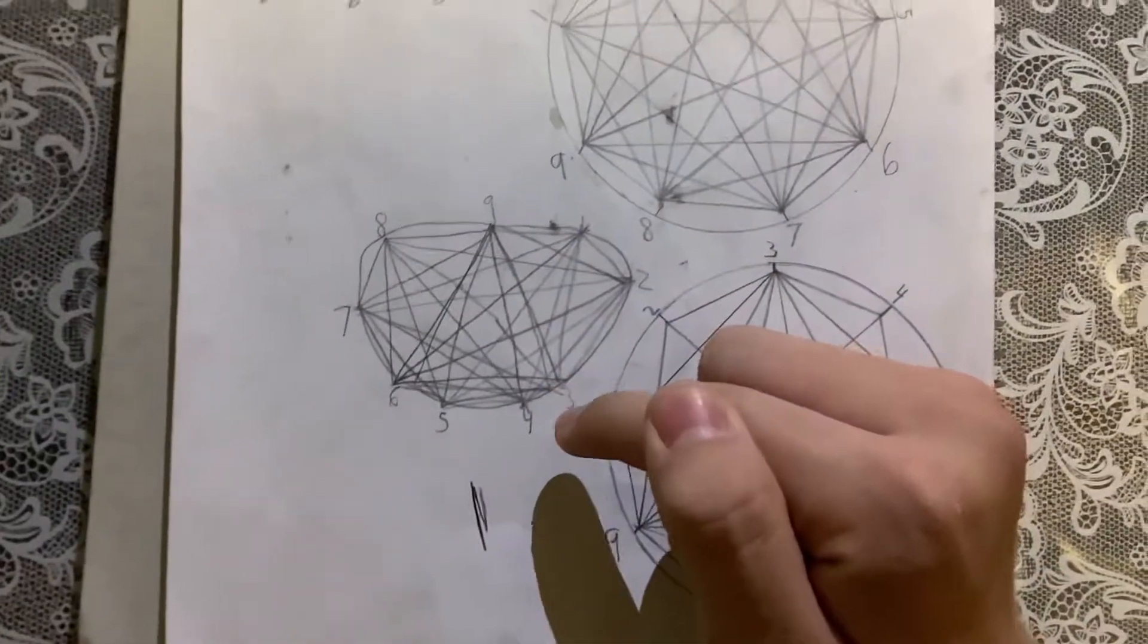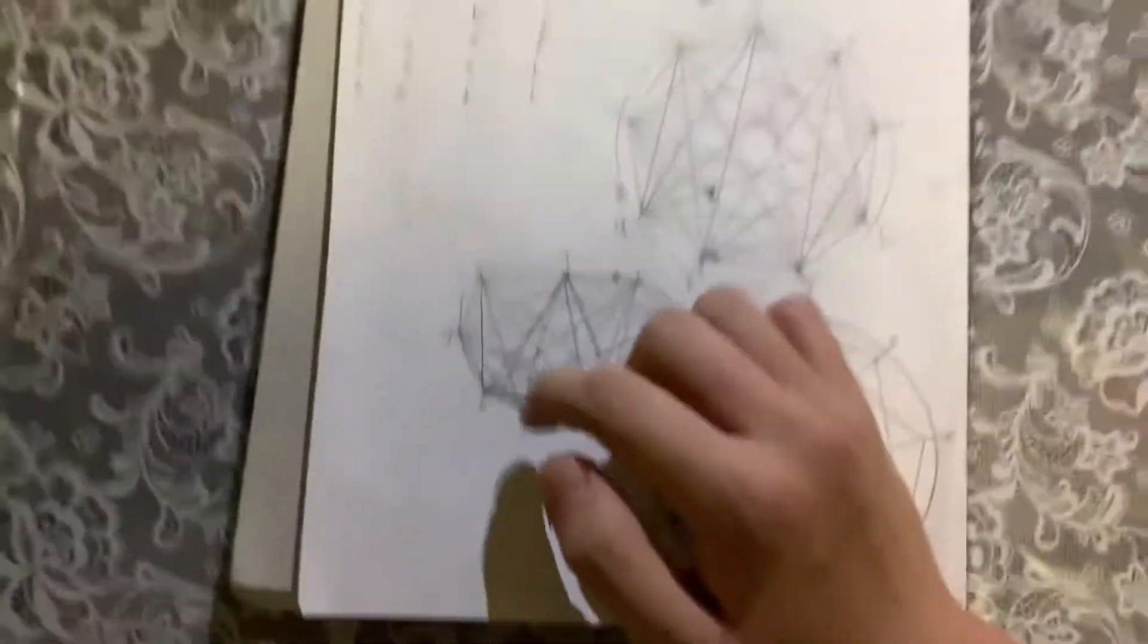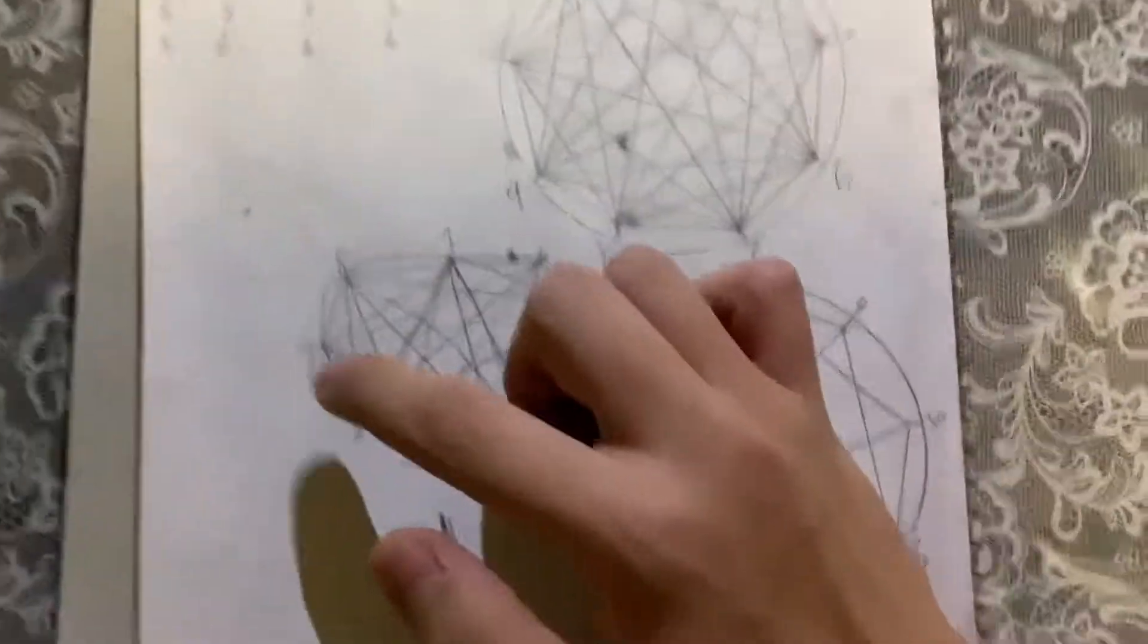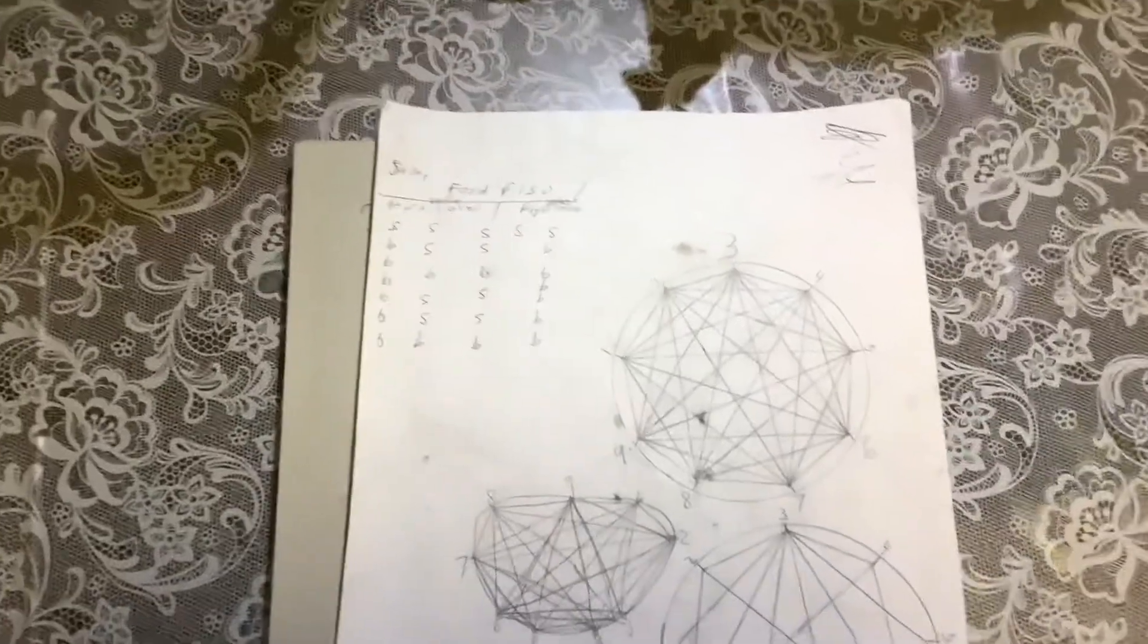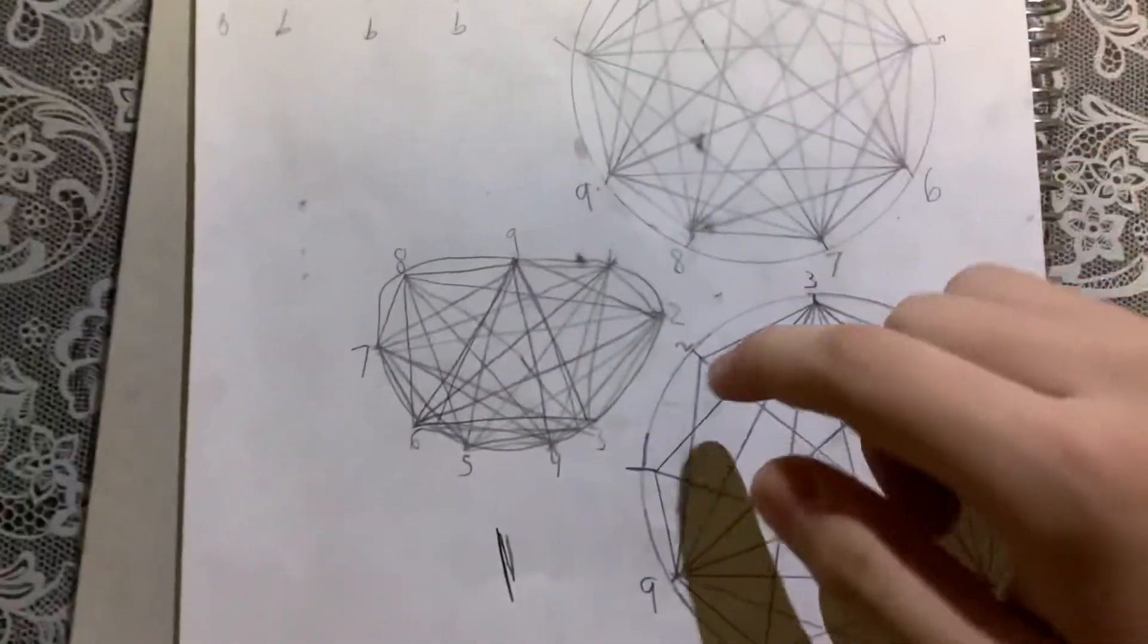So I decided to place it in this order just 369 and then with all the other numbers in between - 7, 8, 1, 2, 3, 4, 5, 6, 7 in a circle. And then I decided, what if I connect all of them to each other?